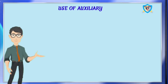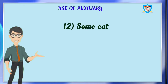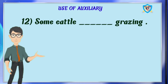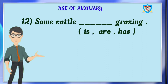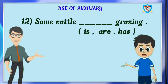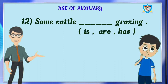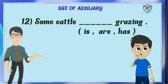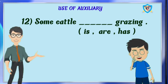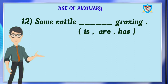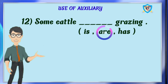Question 12: some cattle dash grazing. Options are is, are, has. The answer is is. No, it is wrong. Here we have to use are because cattle is in plural form.